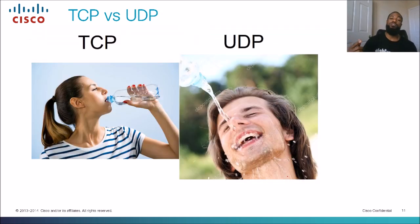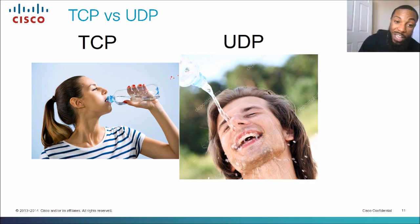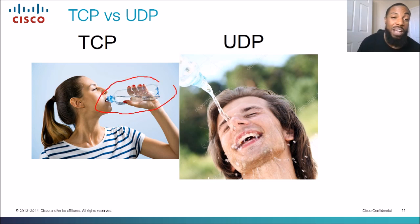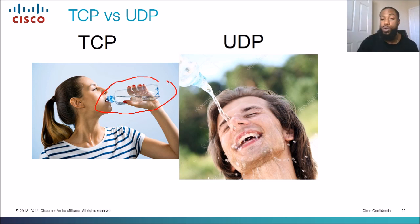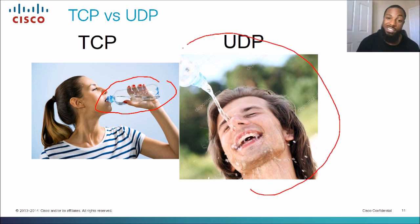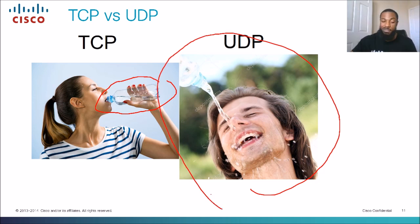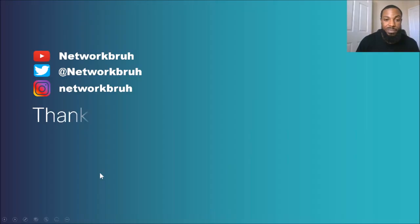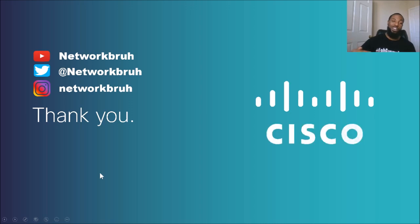Here's another meme that describes the difference between TCP and UDP traffic. TCP traffic — we are very careful when drinking that water, making sure we get every last drop out of that bottle. Whereas UDP traffic, we don't care — we just send that data. Just give me that water.